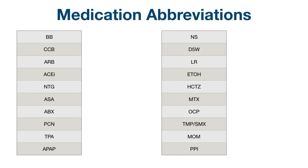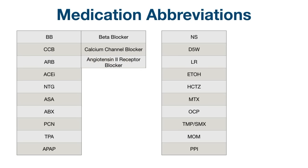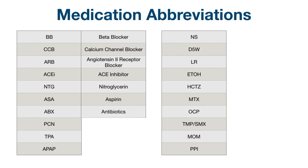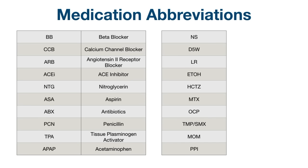Next, we have some abbreviations for different medications or drug names. Try to name as many as you can and then see if you're right. BB: beta blocker. CCB: calcium channel blocker. ARB: angiotensin 2 receptor blocker. ACEI: ACE inhibitor. NTG: nitroglycerin. ASA: aspirin. ABX: antibiotics. PCN: penicillin. TPA: tissue plasminogen activator. APAP: acetaminophen. NS: normal saline. D5W: dextrose 5% in water.